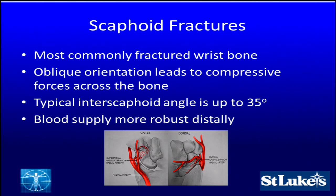Certain fractures of the scaphoid will cause continued flexion of the scaphoid or humpback deformity, and we'll notice intrascaphoid angles increase above 35 degrees. The problem with the scaphoid, like the lunate or the talus, is that the blood supply is more robust distally, and that compromises potential blood supply to the proximal pole with certain fractures that are either displaced or towards the proximal side of the scaphoid.